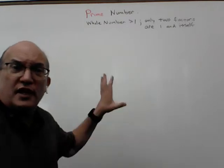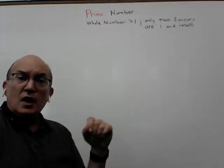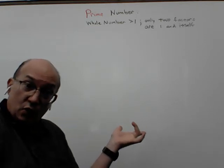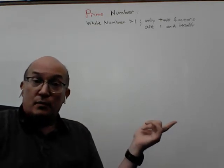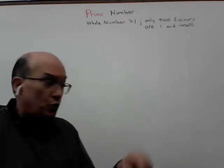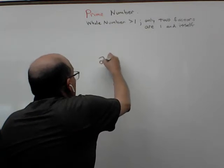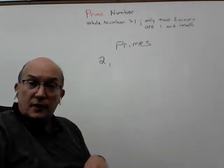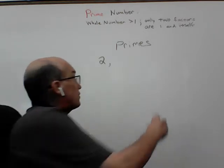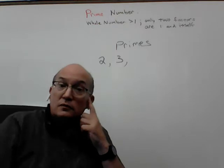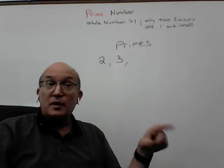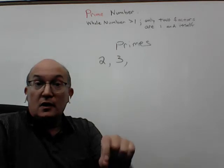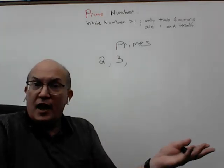I've put the definition in abbreviated form at the top of the board to remind us what a prime number is. Let's try to identify the prime numbers. The definition says it has to be a whole number greater than one, so we'll start with two. What are the factors of two? One times two — two is a prime number. Three: the only two whole numbers that multiply to three are one and three — three is prime. Four: two times two is four, so it has a factor other than one and itself — four is not prime.